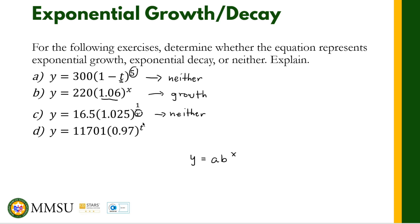This is not an exponential function because the variable is in the denominator. For letter D, we have y is equal to 11,701 times 0.97 raised to t. The base is 0.97, which is less than 1 but greater than 0, so this means we have an exponential decay. Remember, we have exponential decay if the base is between 0 and 1. That's how you determine whether a function represents exponential growth, exponential decay, or neither.